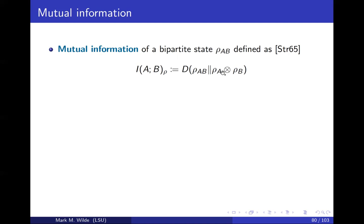This is the formula. You take the state and plug it in as the first argument of the quantum relative entropy. As the second argument, you plug in the tensor product of the marginal states: take rho_AB, take the partial trace over B to get rho_A, take the partial trace over A to get rho_B, take the tensor product, and put it in. If rho_AB is a product state, then it equals rho_A tensor rho_B, and the quantum relative entropy will be zero. If it's not a product state, the quantum relative entropy will be strictly greater than zero, telling you the deviation from a product state.